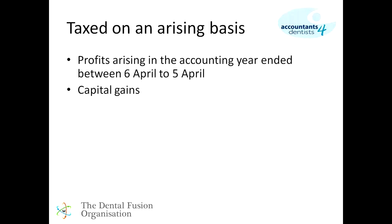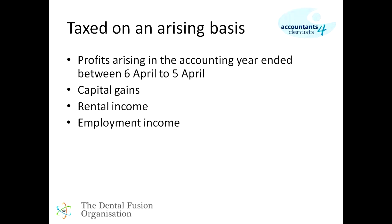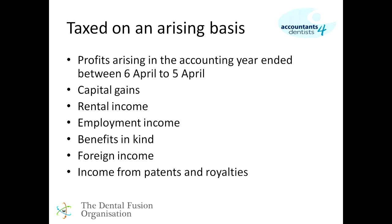Other income taxed on an arising basis includes capital gains. Where practices are sold, the tax point is the date of completion — even if the vendor doesn't receive funds until a year or two down the line. Other types of income taxed on an arising basis include rental income, employment income, benefits in kind, foreign income, patent and royalty income, and pensions. All of these streams are taxed on an arising basis, not necessarily when you receive the income.